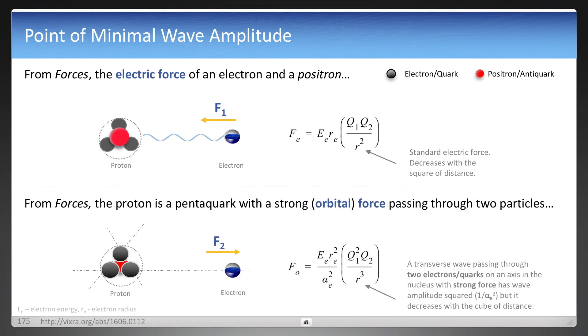Also from the forces video, and the URLs below to the paper, the proton is a pentaquark with an orbital force passing through two particles, two of the quarks. And again, there's the orbital force equation, also reformatted to put the variables in parentheses, and you can see it now decreases with a cube of distance for this force.